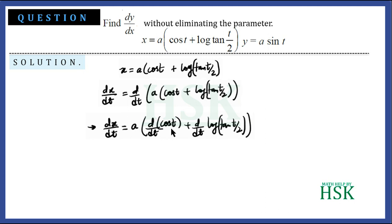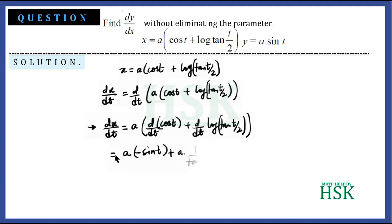Now d/dt of cos t equals minus sin t, and d/dt of log tan(t/2) equals 1/tan(t/2) times d/dt of tan(t/2). So dx/dt = a(−sin t + (1/tan(t/2)) · d/dt of tan(t/2)).